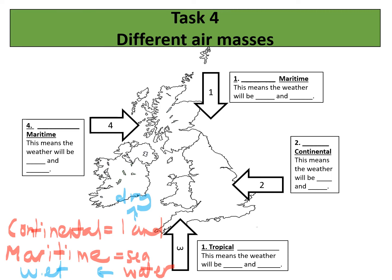Numbers one, two, and four all say either maritime or continental. If it's traveling over continents the weather will be dry; if it's traveling over the sea it's going to be wet. Number three is different because it doesn't tell us where it's coming from, but if we look at the arrow it's traveling from parts of Northern Africa — over continent — which means it's a tropical continental air mass. This is going to bring very hot weather because it's coming from near the equator, and very dry weather because it's coming over the continent.